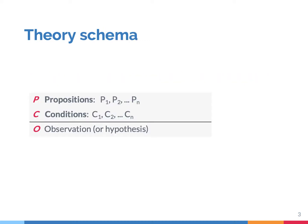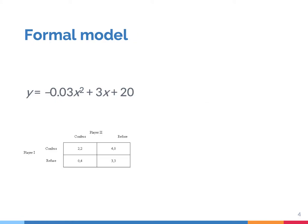We have already reviewed one theory tool, which is the theory schema. A theory schema allows you to identify the propositions, conditions, and hypotheses that belong to a theory. A second theory tool is formal modeling. This tool expresses theories with formalized language, using abstract symbols, numbers, and equations.